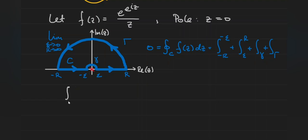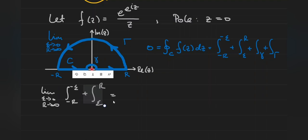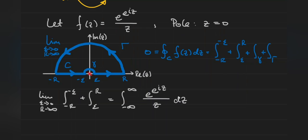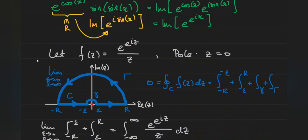Let's evaluate each integral on the right-hand side. First, the integral from negative r to negative epsilon plus the integral from epsilon to r: in the limits as epsilon approaches zero and r approaches infinity, we're just going from negative infinity to zero and then zero to infinity — that's overall the integral from negative infinity to positive infinity of e to the e to the iz divided by z dz. This is technically the principal value, but we don't need to worry about that too much here. This recovers our original integral i from the very beginning.